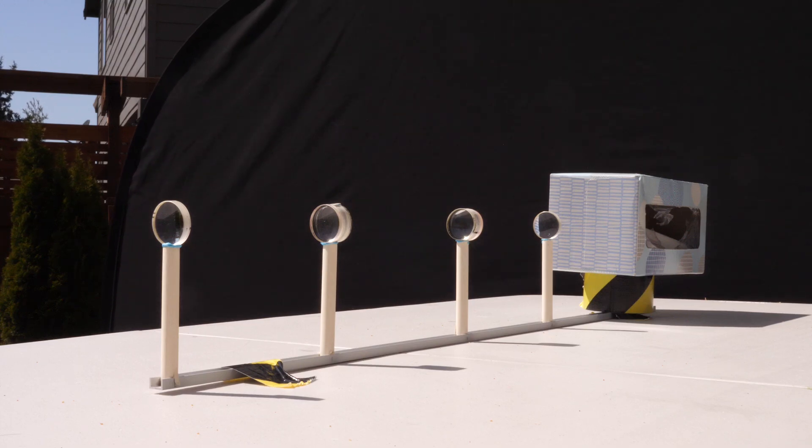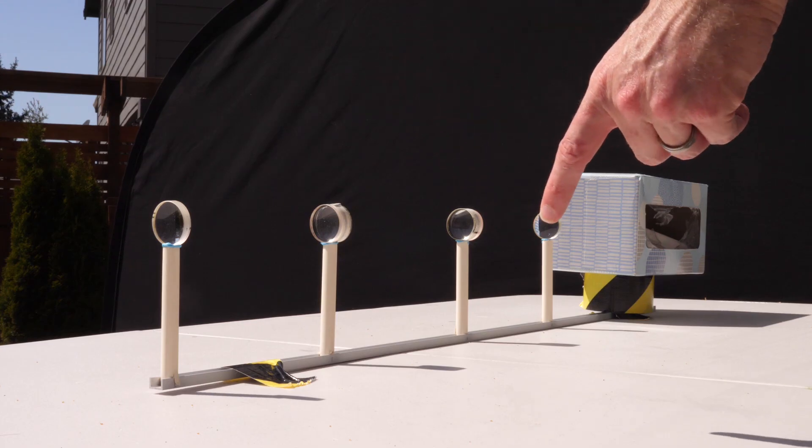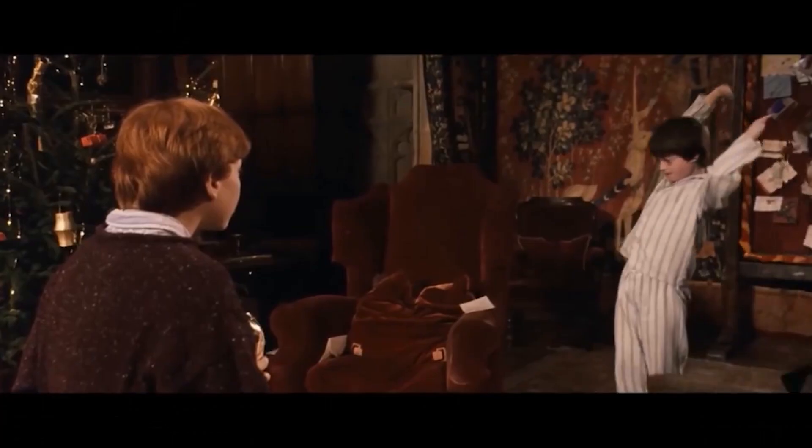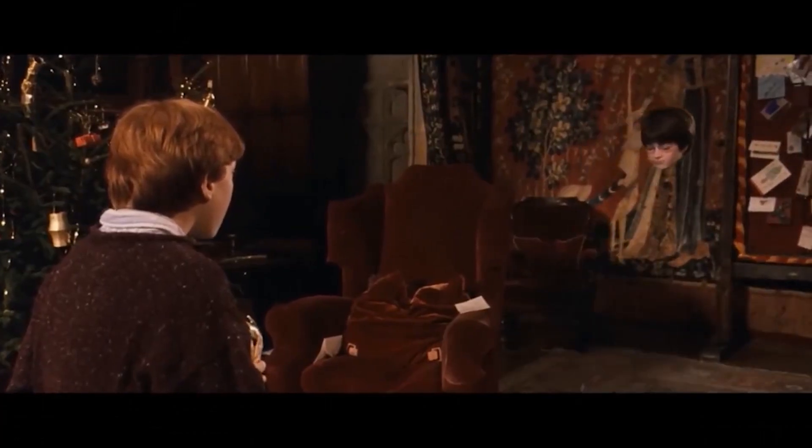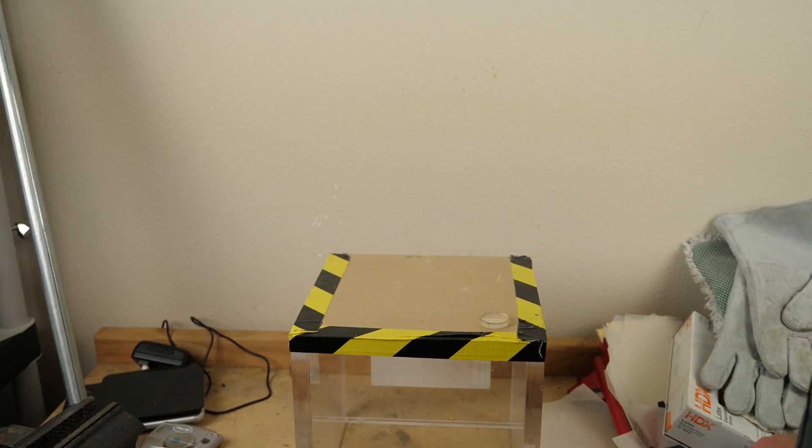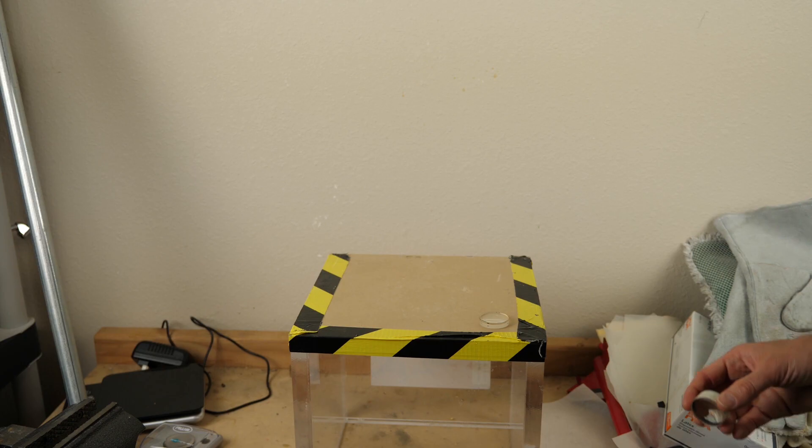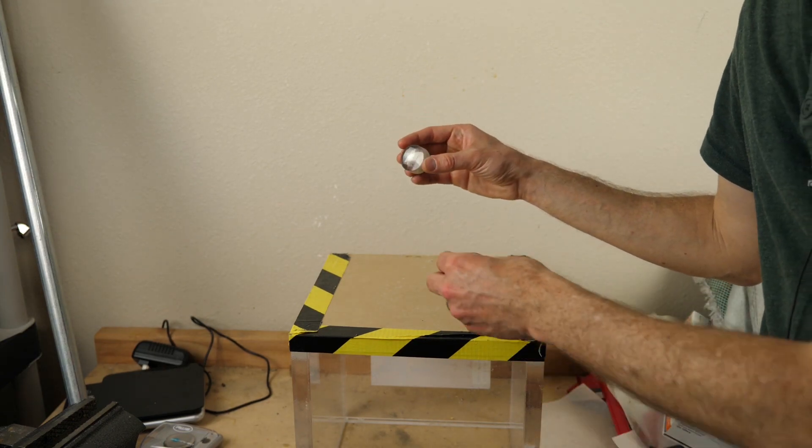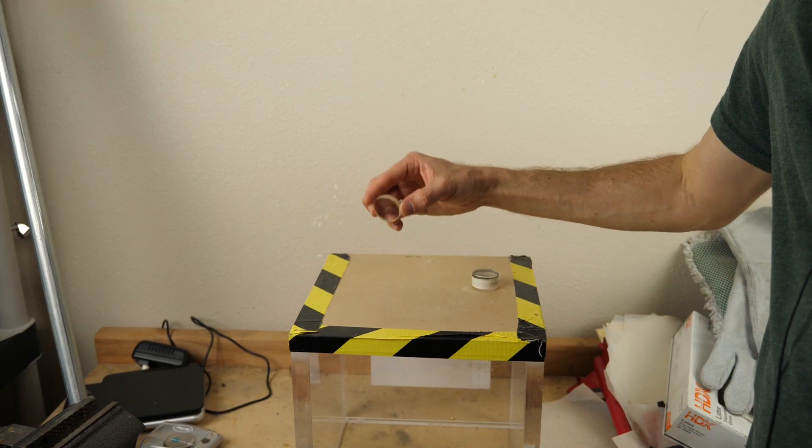Okay, today I'm going to be showing you how I can make my hand disappear by using a real life invisibility cloak. So if you've ever seen Harry Potter, you might have dreamed about having an invisibility cloak just like he has in the movie. Let me show you how I built my real life cloaking device. It's called a Rochester cloak. First I'll explain how it works and then I'll show you it in action.